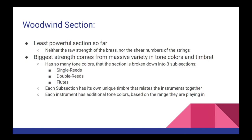There are single reeds, double reeds, and flutes, which includes any instrument that doesn't use a reed. Each subsection has its own unique timbre that relates the instruments belonging to them together. Flutes sound different than the single reeds, and the single reeds sound different from the double reeds. Additionally, the various registers of each individual instrument all have dramatically different tone colors. These shifts in tone color are of the utmost importance to keep in mind when orchestrating your music, as a flute in its high register will have a vastly different sound from the same flute in its lower register. For the remainder of this video, we're going to take a closer look at each of these subsections and the instruments that they consist of.